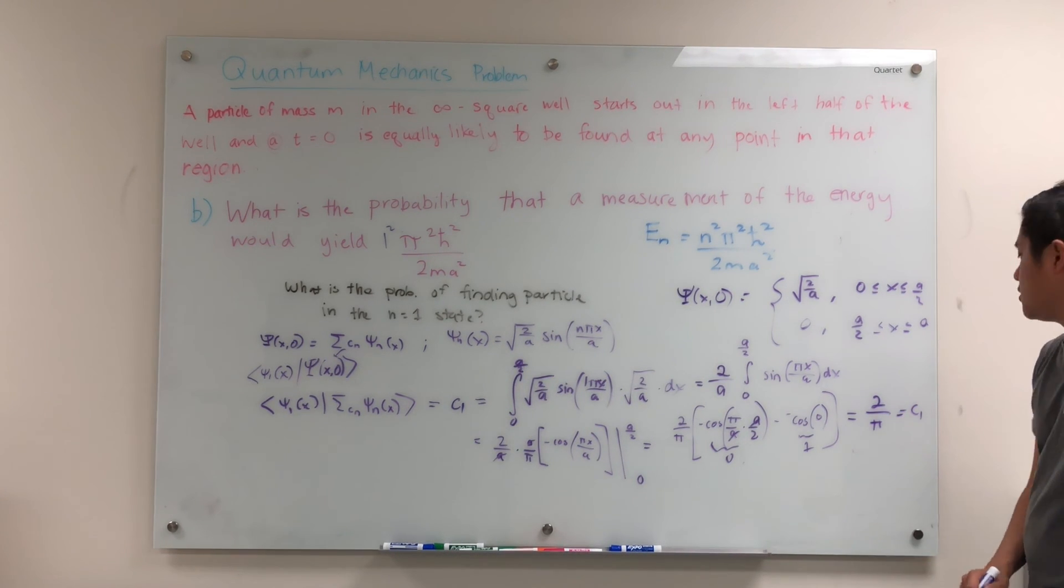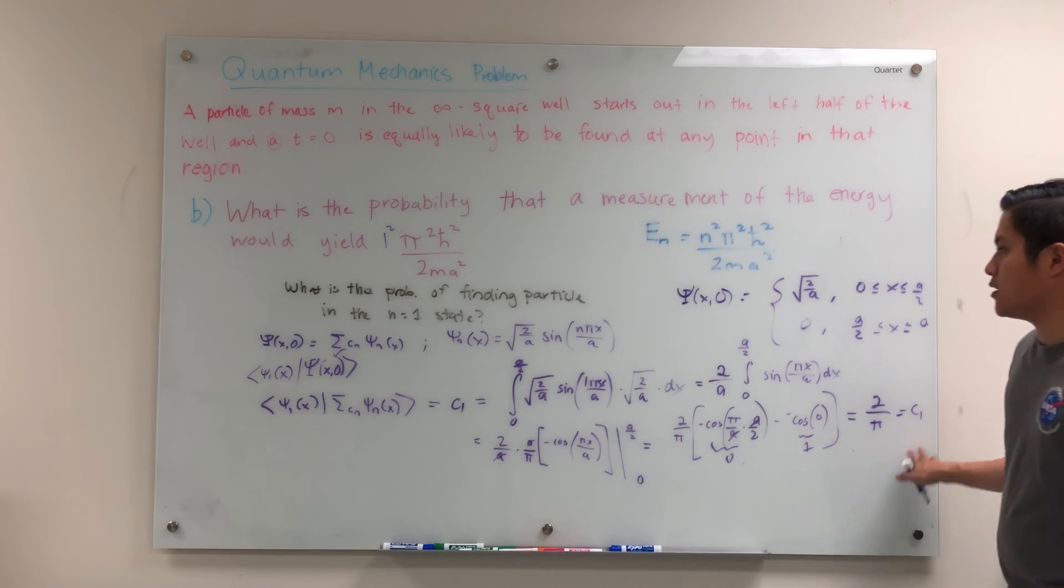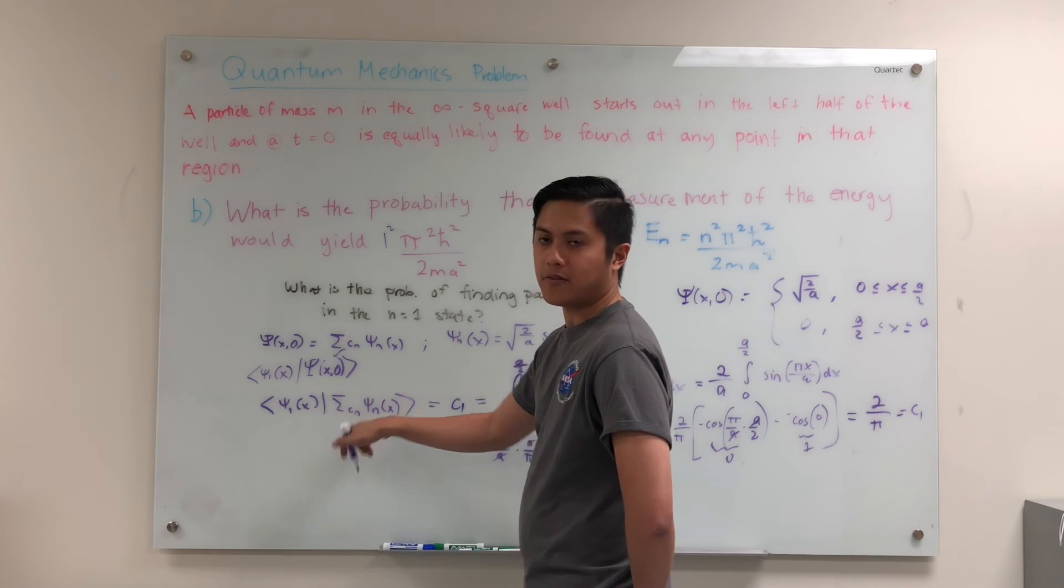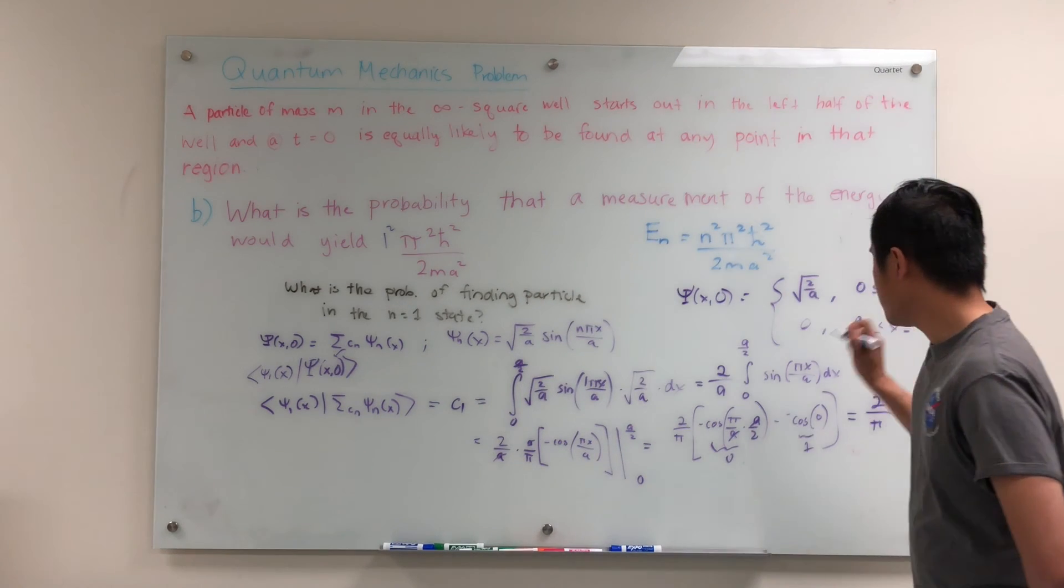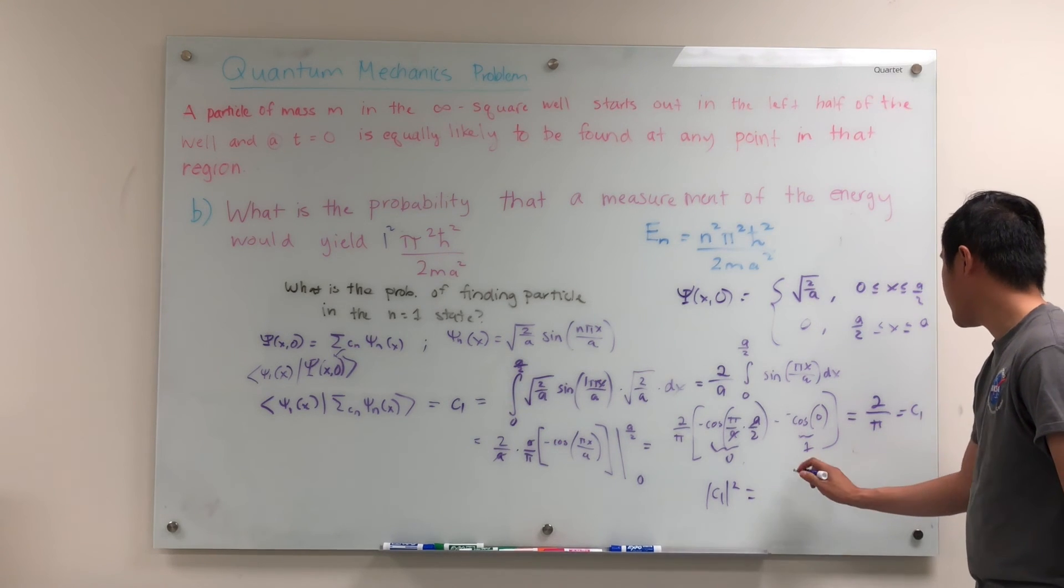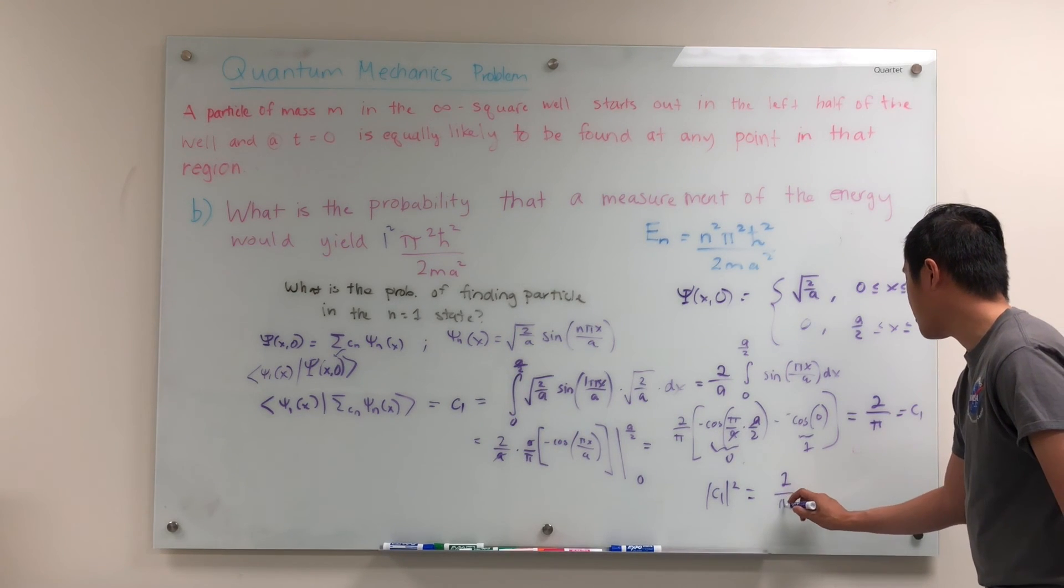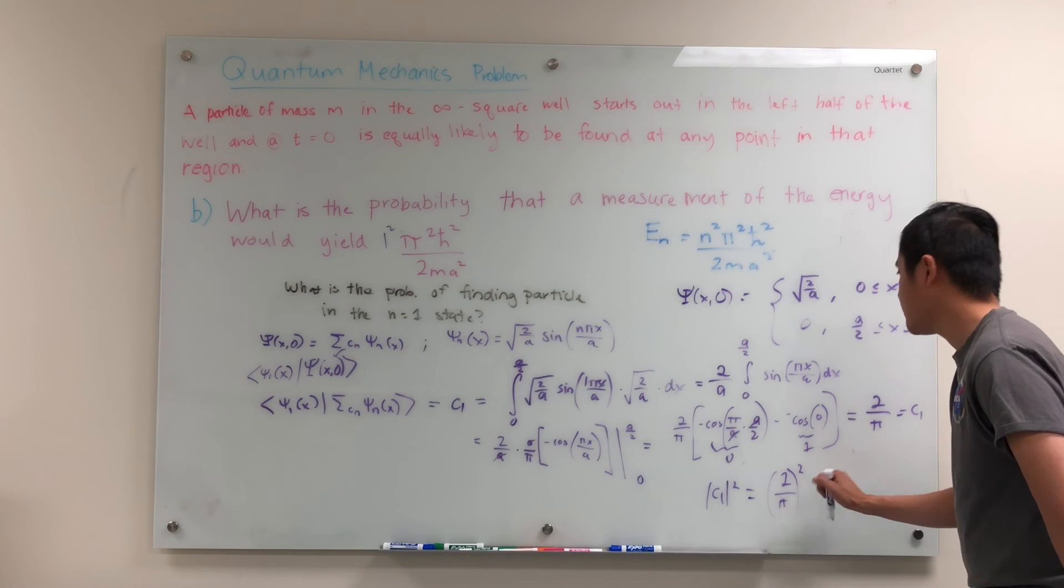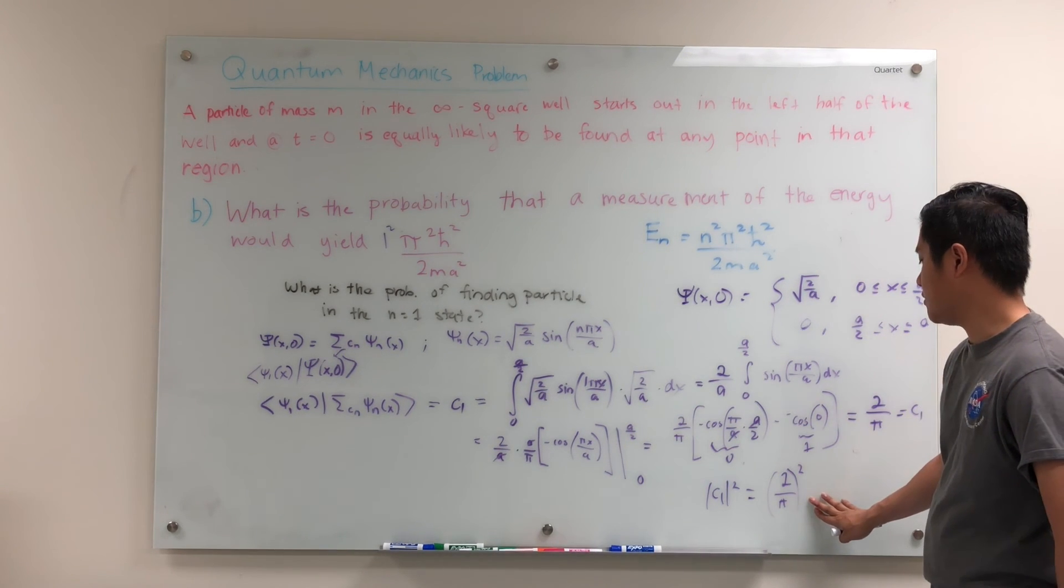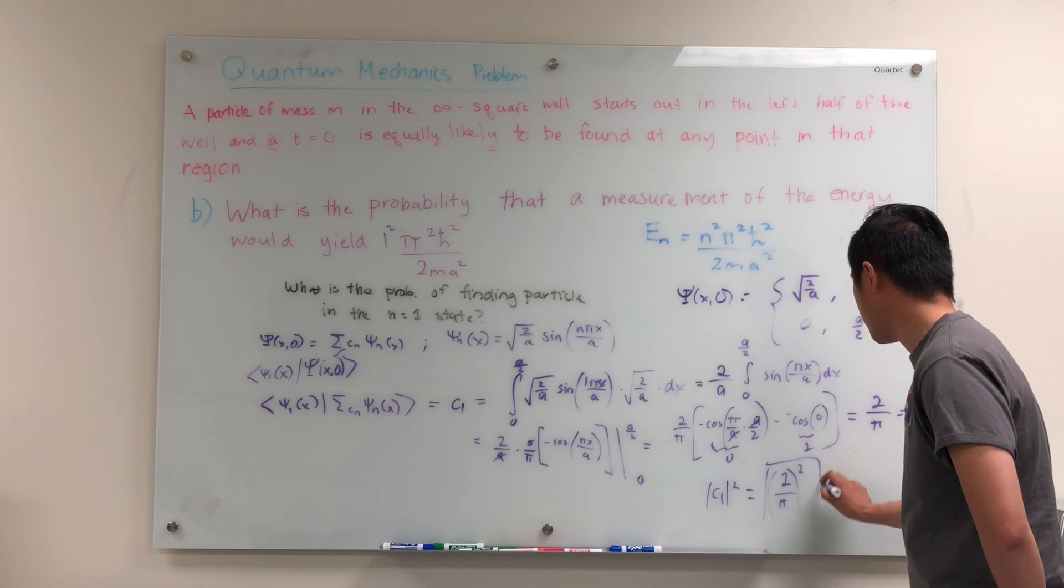Remember, that's C1. That's the coefficient associated with the n equals 1 wave function. And so we know that C1, absolute value squared, that is going to be 2 over pi squared. And this is the probability of finding the particle in state n equals 1. So this is the answer we're looking for.